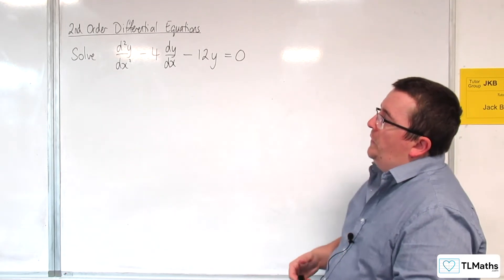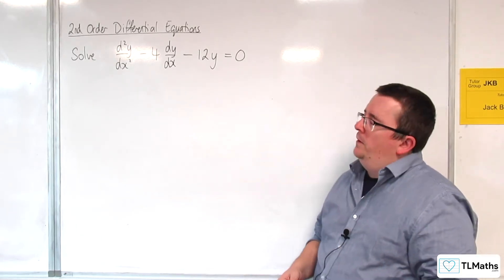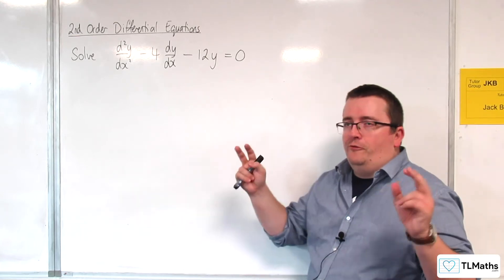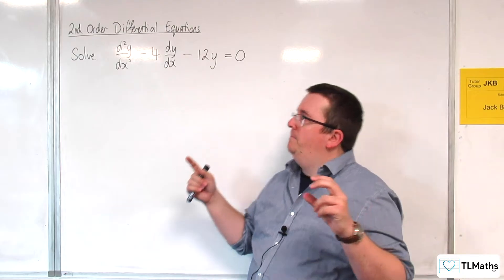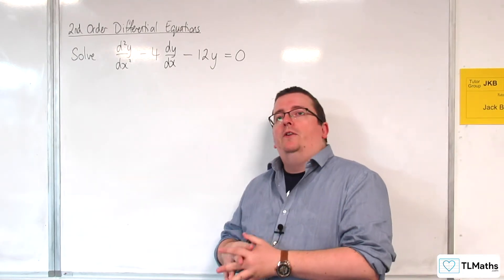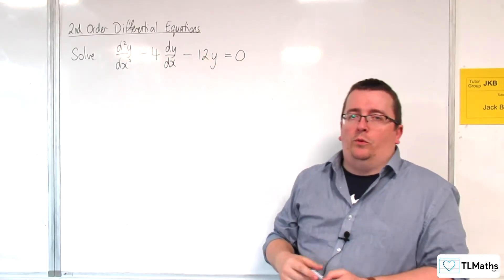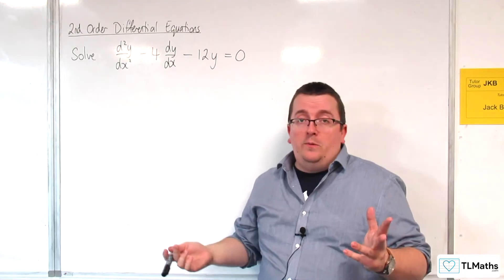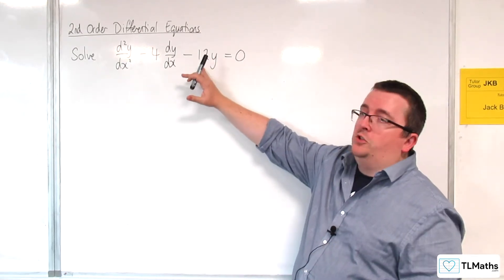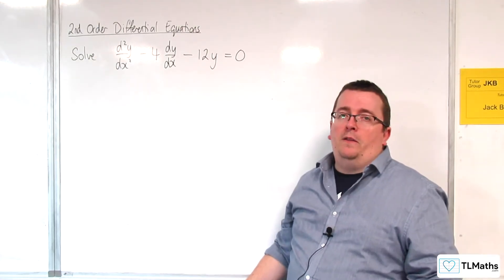In the previous video, I suggested that it looks similar to a quadratic equation. So if this was a quadratic x² - 4x - 12 = 0, I would be saying I want two numbers that multiply together and make -12, but add together and make -4. And that would be -6 and +2.